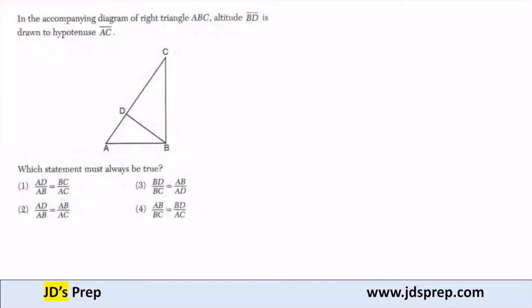So because the altitude is drawn to the hypotenuse, and that is perpendicular, it's creating similar triangles. So I know that this triangle, our bigger triangle ABC, is going to be similar to triangle ADB.